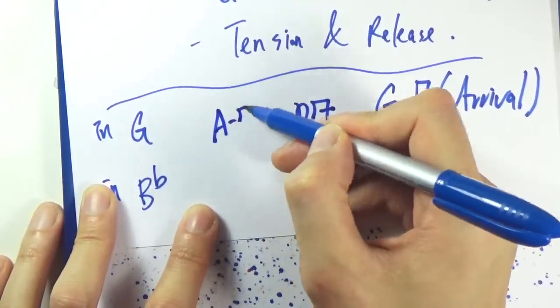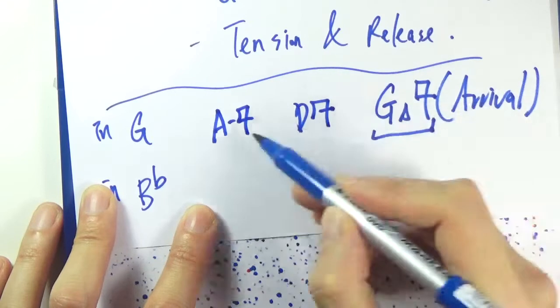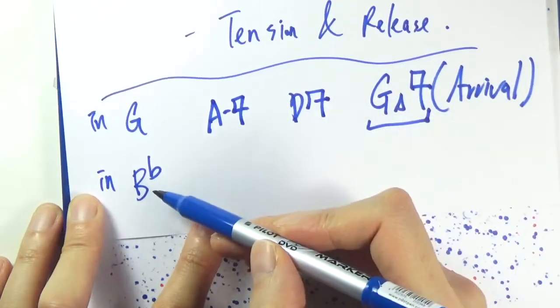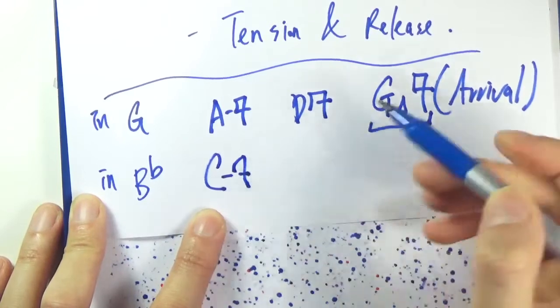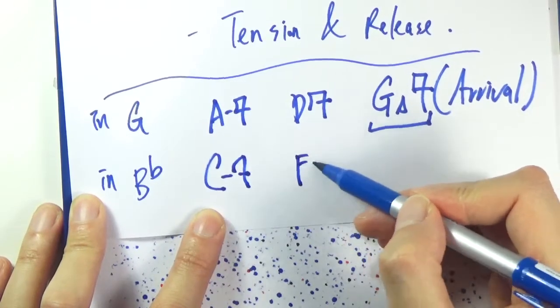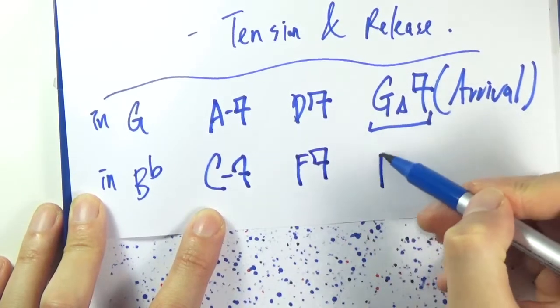So that would be a D7, a 2 would be an A-7, so 2, 5, 1. In Bb major, the 2 would be a C minor, and a 5 would be F7, and then a 1 would be the Bb major 7.